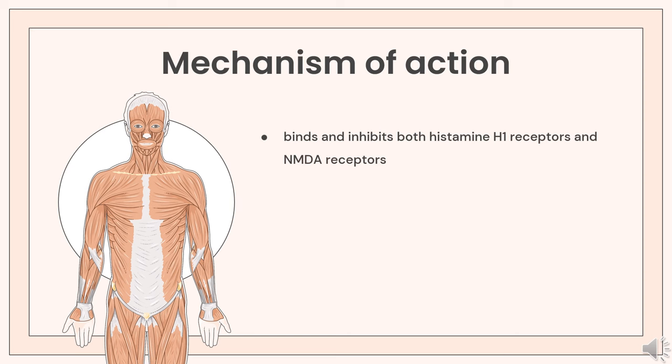Orphenidrine binds and inhibits both histamine H1 receptors and NMDA receptors. It restores the motor disturbances induced by neuroleptics, in particular the hyperkinesia. The dopamine deficiency in the striatum increases the stimulating effects of the cholinergic system. This stimulation is counteracted by the anticholinergic effect of orphenidrine. It may have a relaxing effect on skeletal muscle spasms and it has a mood-elevating effect.